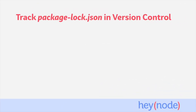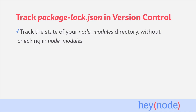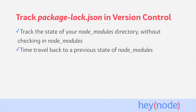Again, your package-lock.json file is something you should commit to version control. Some of the benefits of doing so are tracking the state of your node_modules folder without having to actually check the folder itself into version control. Checking in your node_modules folder is considered an anti-pattern with Node.js, because we want to keep our git history clean and not worry about changes in code that we didn't write. Checking in your package-lock allows you to time travel back to a previous state of your node_modules folder whenever you want — so you can see exactly when a sub-dependency changed, or use a previous version of your node_modules directory.